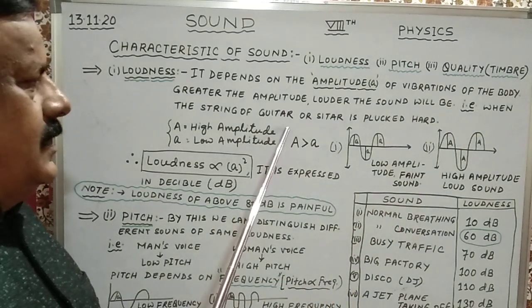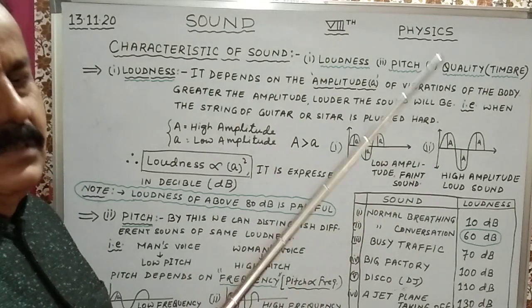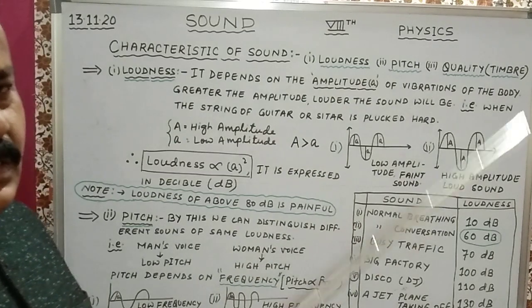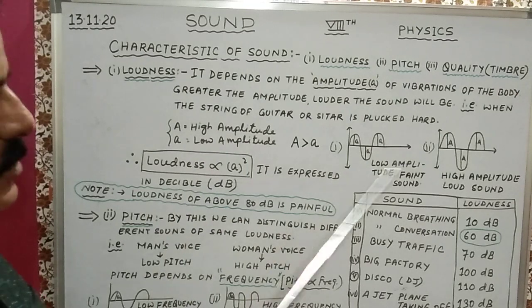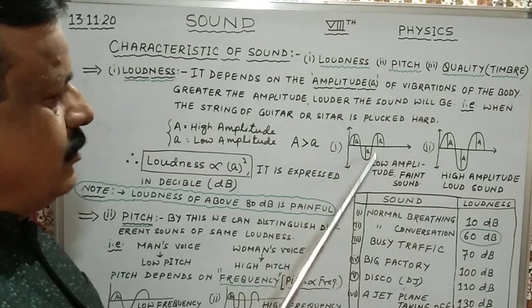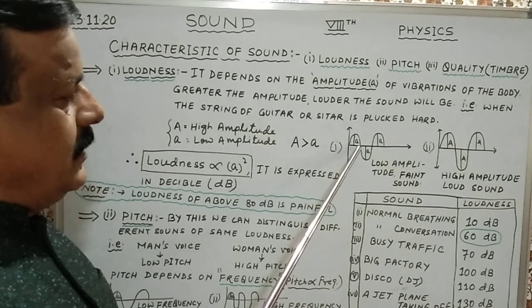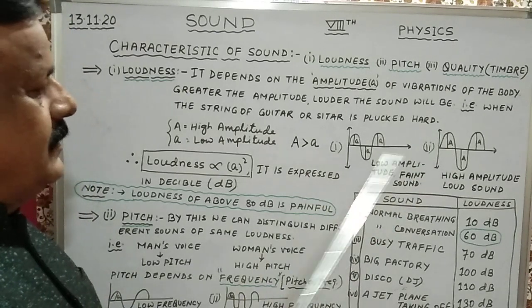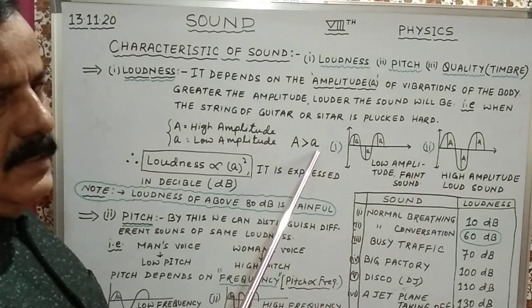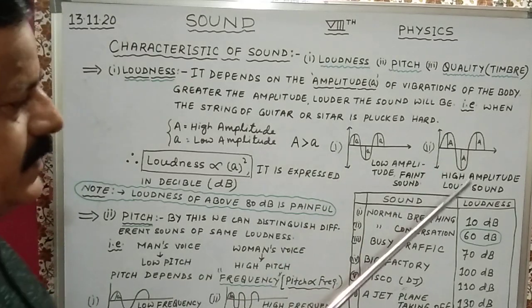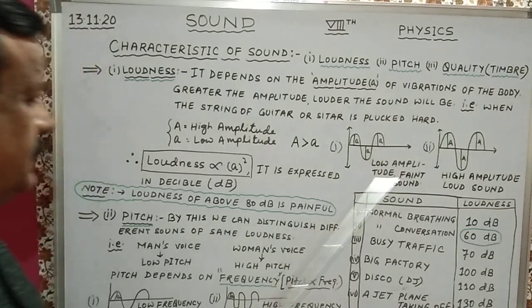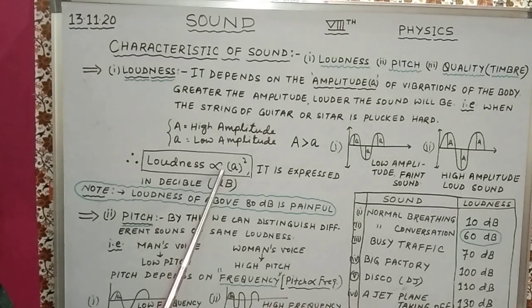For example, when the string of a guitar or sitar is plucked hard, you will find high amplitude and loud sound. Looking at the figure, you can see two different sound waves. One has small amplitude 'a' and the other has greater amplitude 'A'. Capital A is greater than small a, meaning higher amplitude produces loud sound, while low amplitude produces faint sound. Loudness is directly proportional to the square of the amplitude.